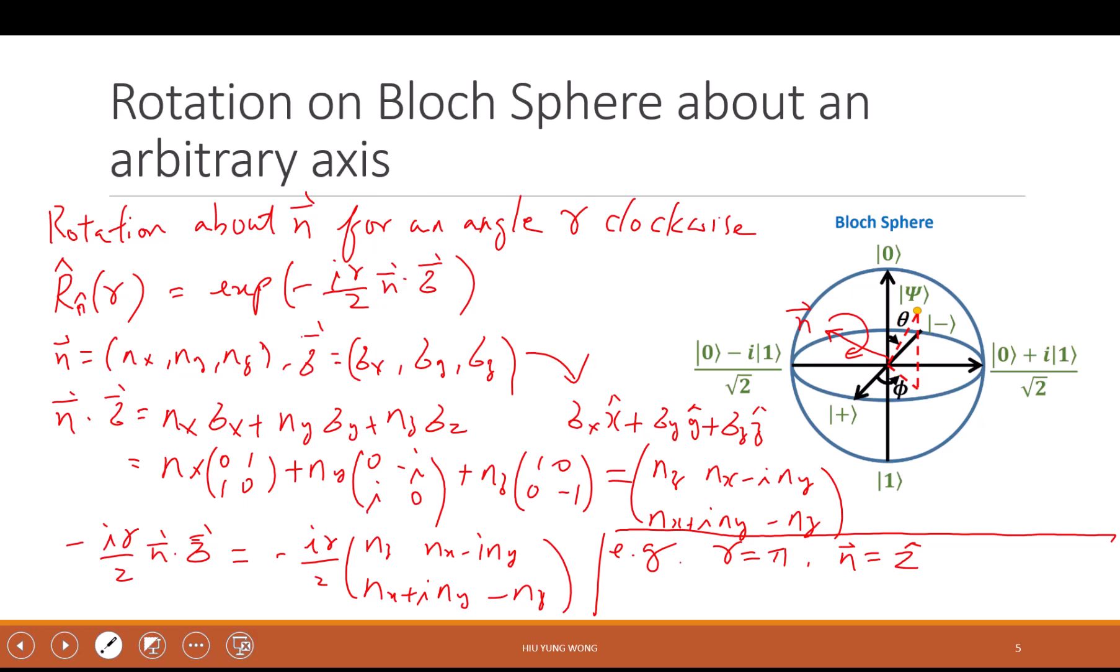This is very easy to memorize because it's talking about rotating about a unit vector in real 3D space, n, by angle γ. It's exponential negative γ over 2. You always remember to have this 2 because we found out you need 4π rotation to get back to the original state, and then this is the Pauli vector dot product with the unit vector n·σ.